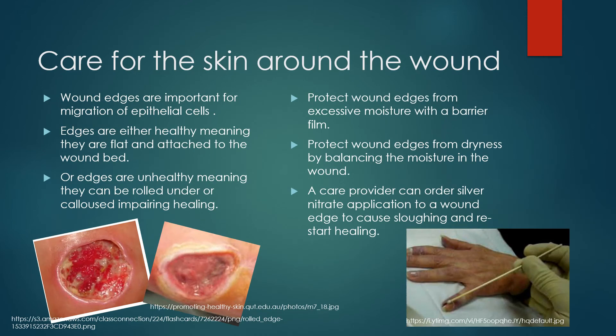You want to care for the skin around the wound. Wound edges are important for migration of epithelial cells. Edges are either healthy — flat and attached to the wound bed — or unhealthy, meaning they're rolled under or calloused, impairing healing. You want to protect the wound edges from excessive moisture with a barrier film and protect the edges from dryness by balancing the moisture in the wound. A care provider may order silver nitrate application to a wound edge, which will cause sloughing and may restart the healing process.